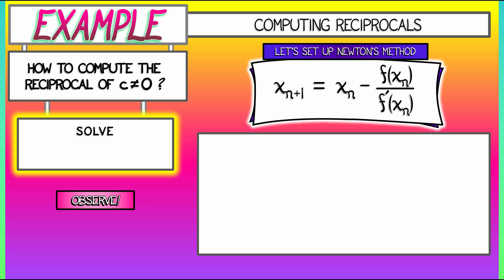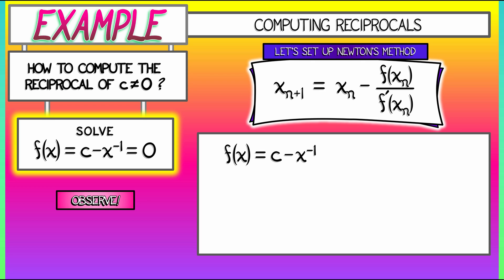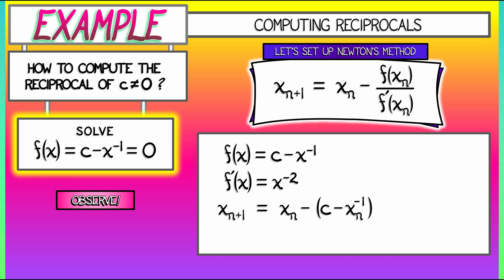I can realize the reciprocal of c as the solution to the equation f of x equals c minus 1 over x equals 0. If I solve that for x, I get 1 over c. So our function f is c minus x to the negative 1. Its derivative is x to the negative 2—since c is a constant, we get minus minus x to the negative 2. Newton's method then gives xₙ₊₁ equals xₙ minus the quantity c minus 1 over xₙ, divided by xₙ to the negative 2, which is multiplied by xₙ squared. Multiplying through and factoring out xₙ, we get xₙ₊₁ equals xₙ times the quantity 2 minus c times xₙ.